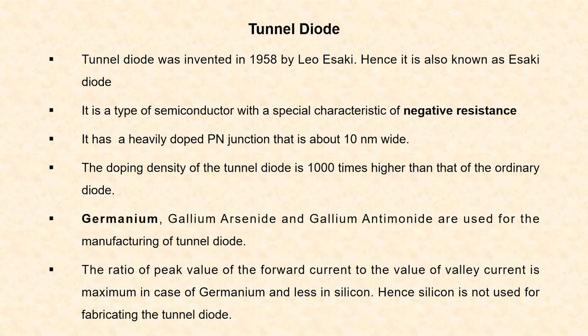Tunnel diode was invented in 1958 by Leo Esaki. Hence it is also known as Esaki diode. It is a type of semiconductor with a special characteristic of negative resistance.